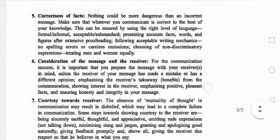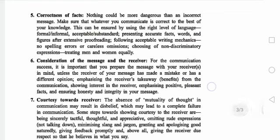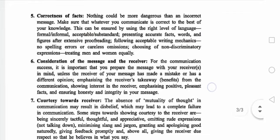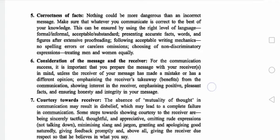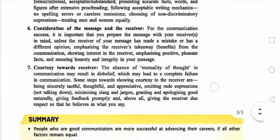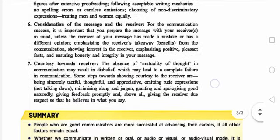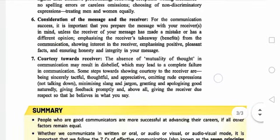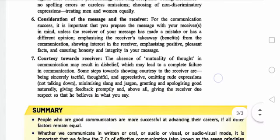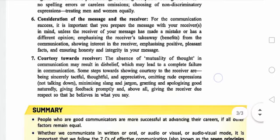Number 5: Correctness. The correct message means that what you communicate is correct — to the best of your knowledge. You should be sure that your communication is correct to the best of your knowledge. Number 6: Consideration of the message and the receiver. For communication success, it is important that you prepare the message with your receiver in mind. You should know your audience's level and communicate according to the receiver's knowledge.